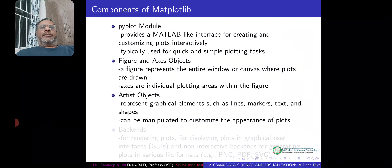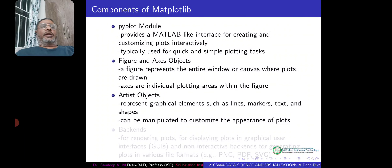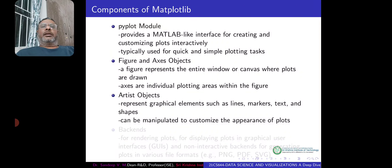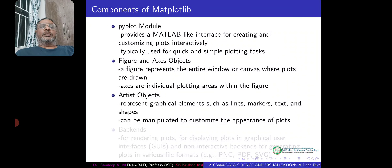Artist objects are used to represent graphical elements like lines, markers, text, and shapes. When plotting data, we may use lines to show how data is changing. We may want to mark specific points using markers, and if we have multiple categories, each marker can have a different shape and color. We can also add text to the plot for better understanding. These artist objects can be manipulated to customize the appearance of the plots.